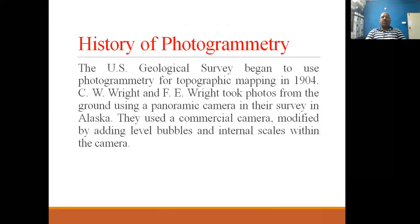The US Geological Survey began to use photogrammetry for topographic mapping in 1904. C.W. Wright and F.E. Wright took photos from the ground using a panoramic camera in their survey in Alaska. They used a commercial camera modified by adding level bubbles and internal scales within the camera.